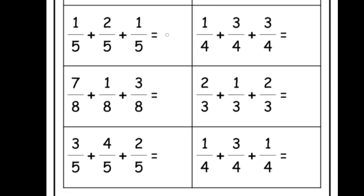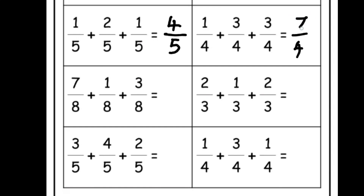Now let us add these three fractions together. The denominator will be 5 and the numerator will be 1 plus 2 plus 1, which equals 4, so the answer is 4 by 5. In the next question, the denominator will be 4, and adding the numerators: 1 plus 3 plus 3 equals 7, so this became 7 by 4.